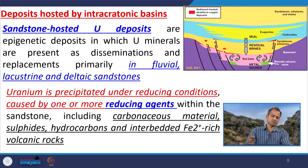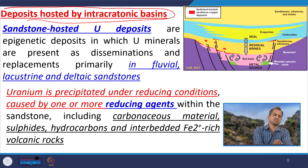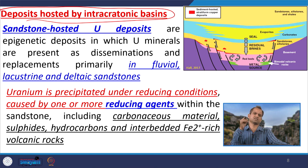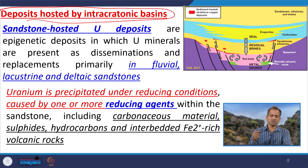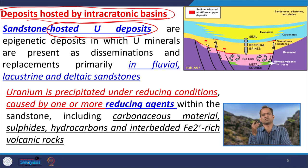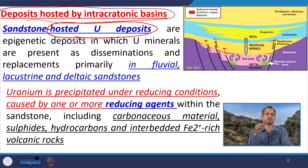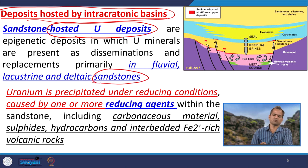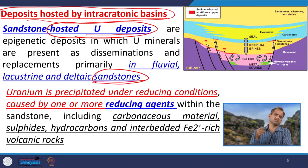Another type of deposit is mostly hosted by intracratonic basins. We are talking about mineralization within the large igneous province magma, and now we are talking about how intracratonic basins can be mineralized within this intraplate mineralization system. Mostly the sandstone-hosted uranium deposit is the most eye-catching — it is an epigenetic deposit where uranium minerals are present as disseminations and replacements, primarily in fluvial, lacustrine, and deltaic sandstones. We need a sandstone — either fluvial, lacustrine, or deltaic — and we will discuss later how the sandstone is enriched in uranium with time.